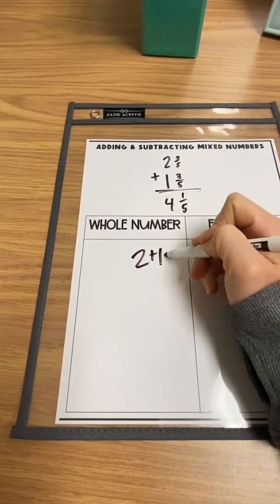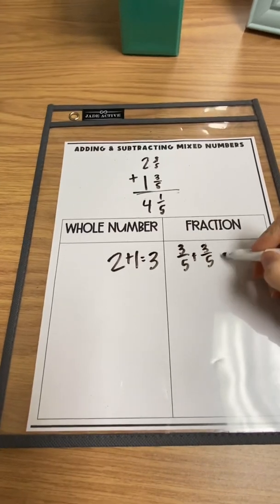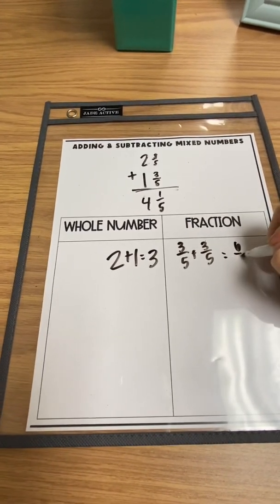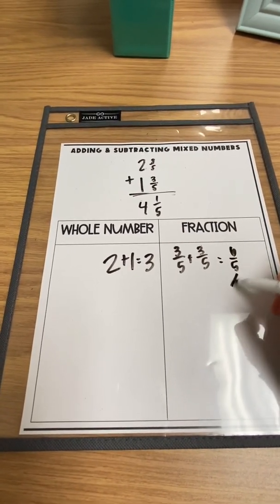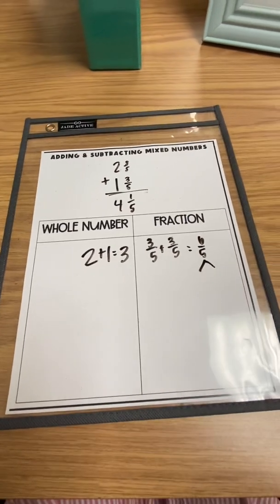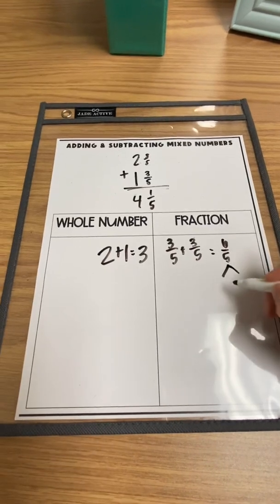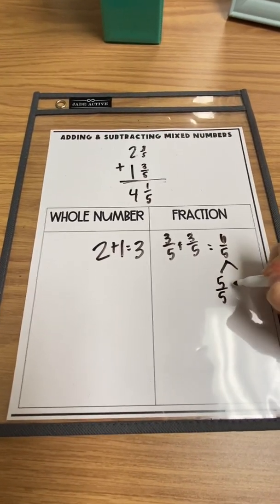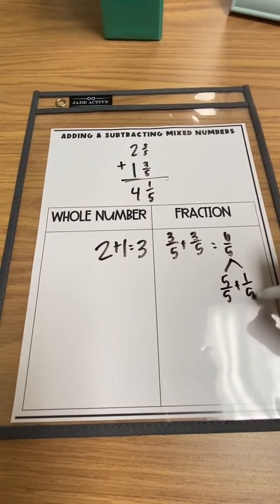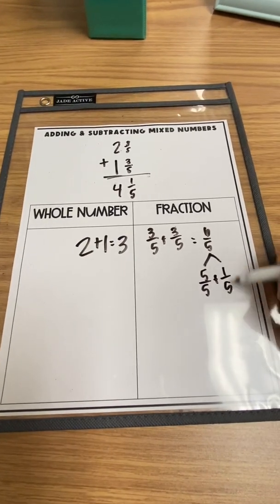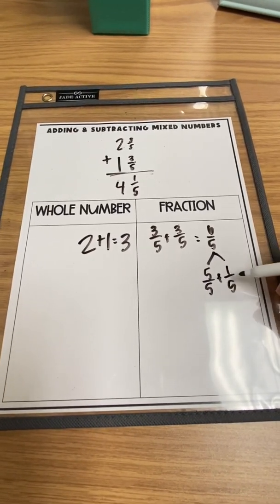And then 2 plus 1 gives them 3. And 3 5ths plus 3 5ths is 6 5ths. And then they're able to see because of their experience with these cubes that they know that 6 5ths can break down into a hole, which is 5 5ths plus 1 5th would be left. So they're decomposing the 6 5ths into a hole and 1 5th.